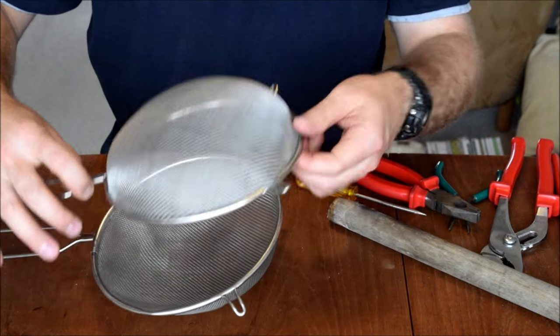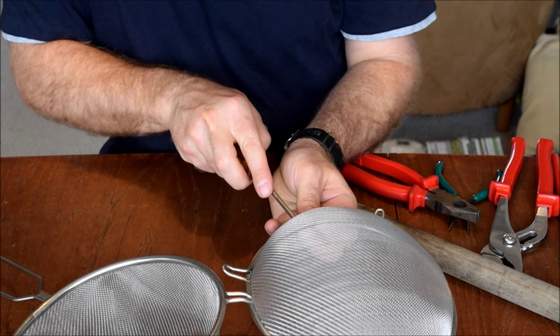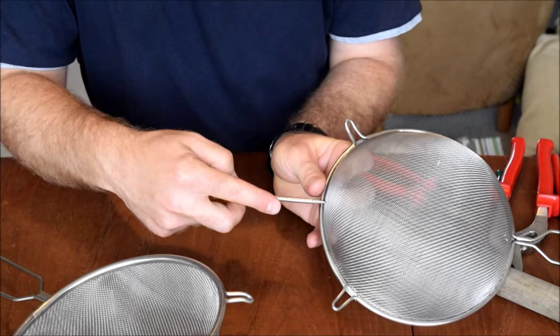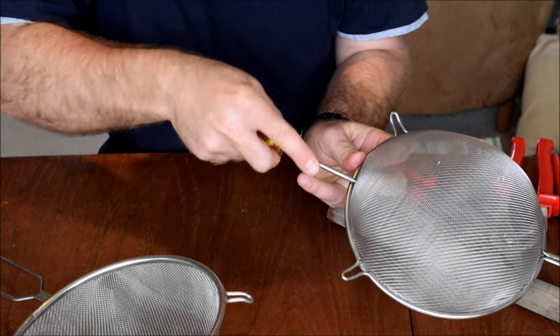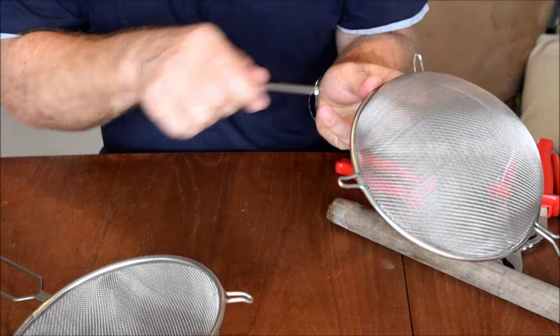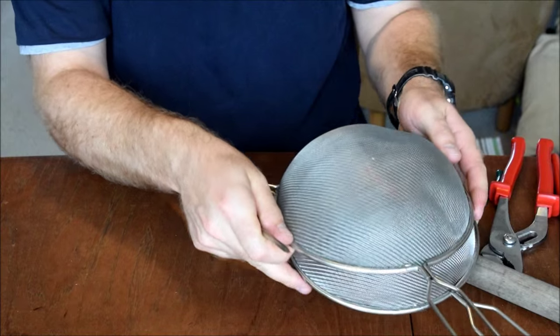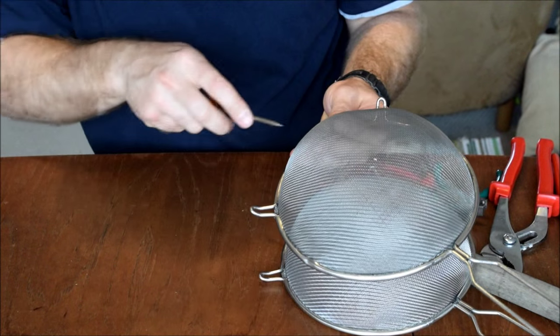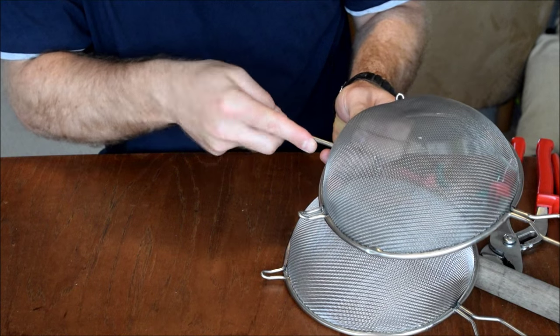So the first step is to use a tool to make a small hole on this far side of the sieve here. Do the same on the other sieve. It's important to get them exactly central.